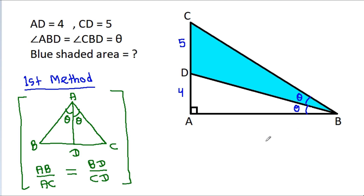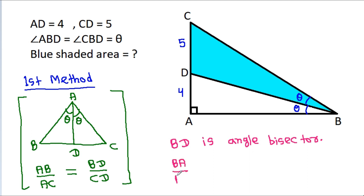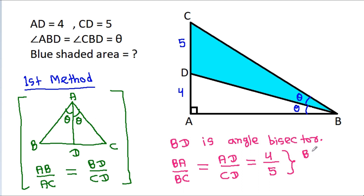And here BD is the angle bisector. So BA by BC will be equal to AD by CD, and AD is 4, CD is 5. That means if BA is 4X, then BC will be equal to 5X.